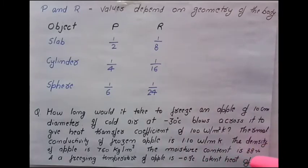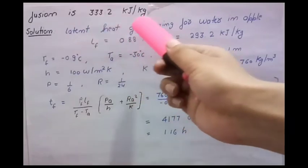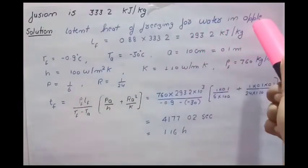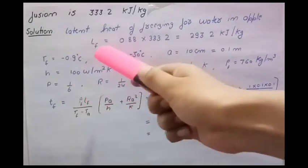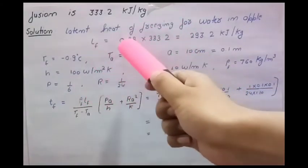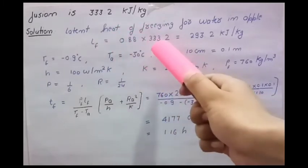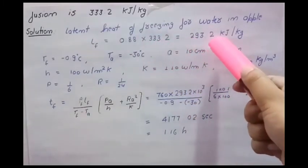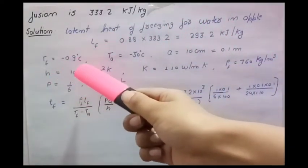Latent heat of fusion is 333.2 kilojoule per kg. Now let us see the solution. The latent heat of freezing for water and apple: 88 percent is the moisture content given in the question, so the latent heat of freezing we can calculate by multiplying the moisture content 0.88 into the latent heat of fusion 333.2 kilojoule per kg, so we get 293.2 kilojoule per kg.